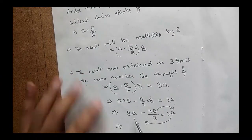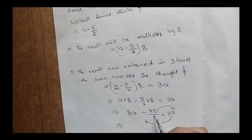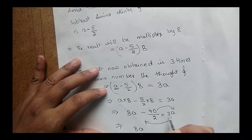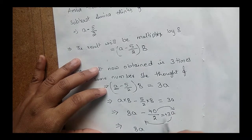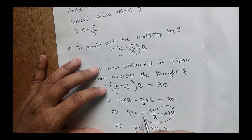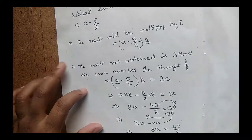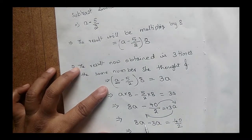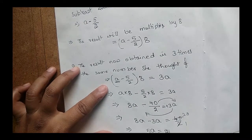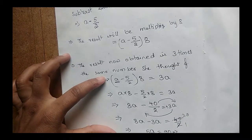Constants go to one side and variables to the other. Moving 3a to the left: 8a - 3a = 40/2. Simplifying: 5a = 20. So a = 20/5.